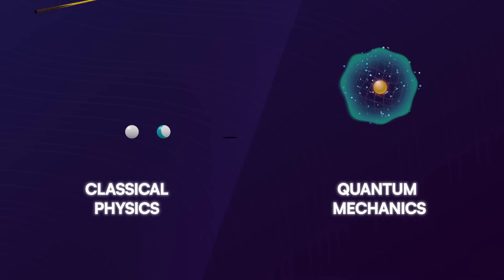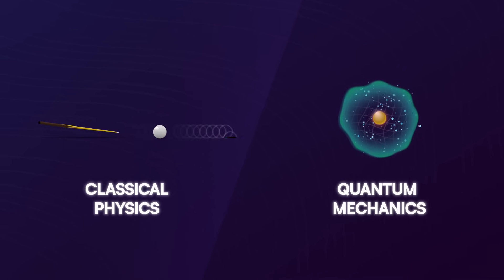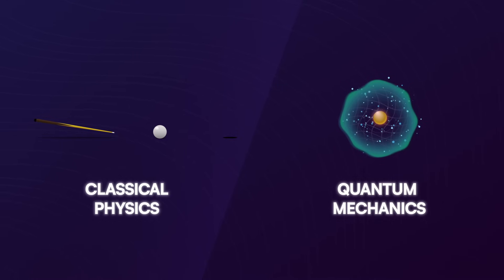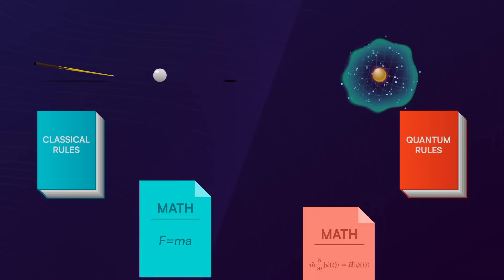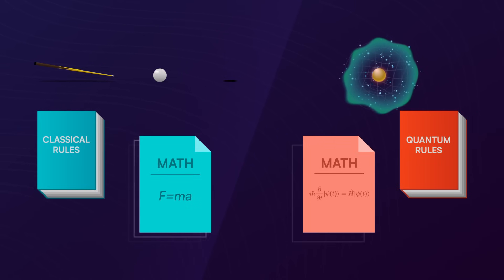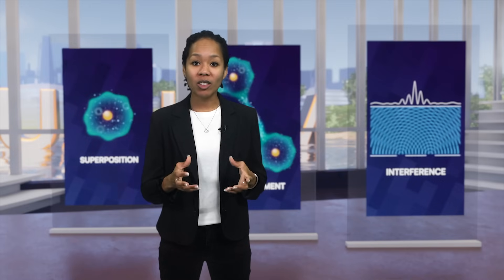Quantum physics appears very different from physics at the macroscopic level that you and I are most familiar with. The rules that govern the quantum world are different, and the mathematics we use to describe that world is different, too. It's just how nature behaves at small scales. This behavior isn't something we typically encounter in our day-to-day lives, so it might feel a little strange. But the reality is that the universe around us is built up from small particles that follow quantum rules. We live in a quantum world.